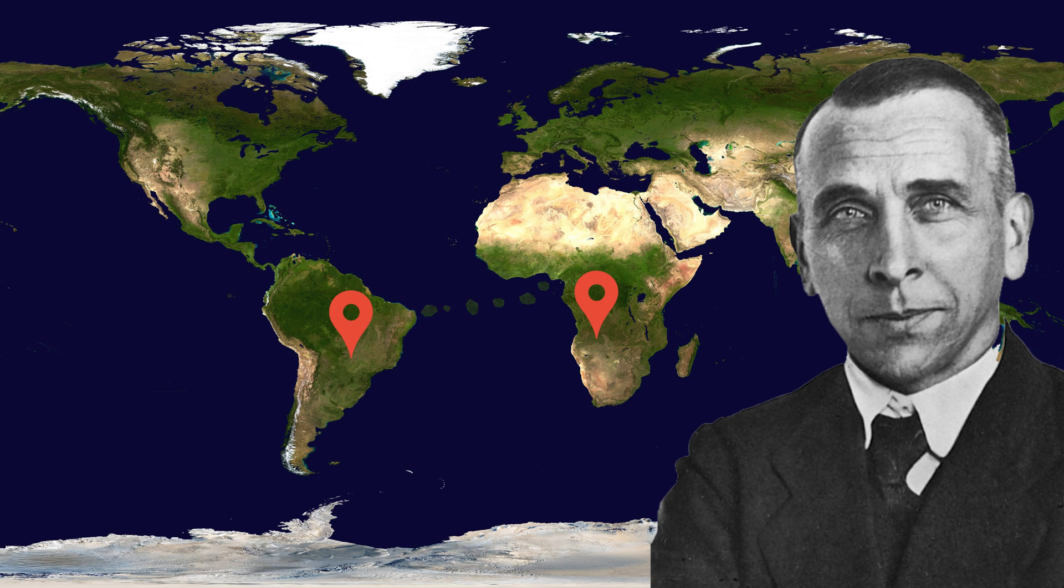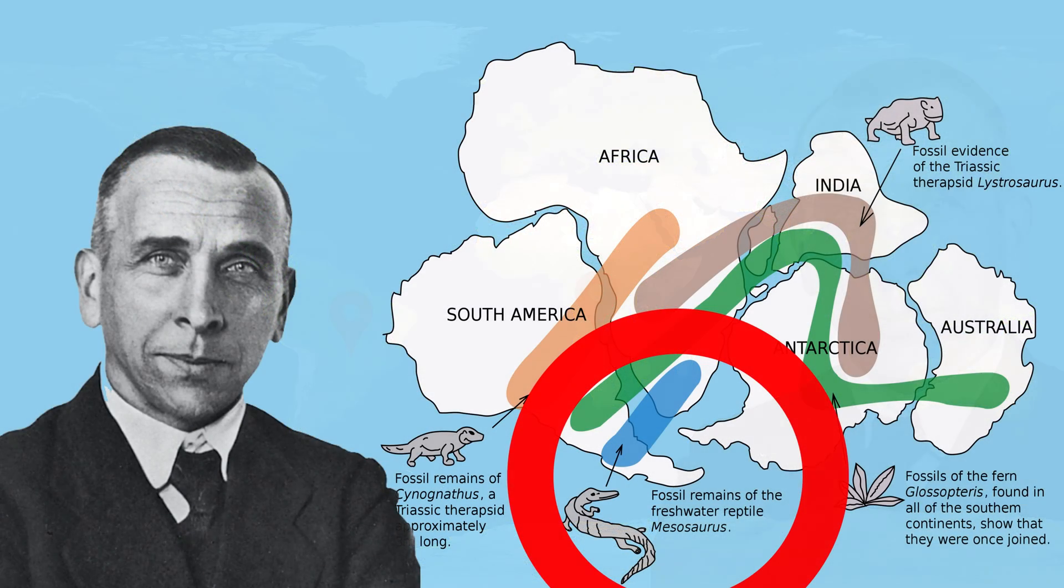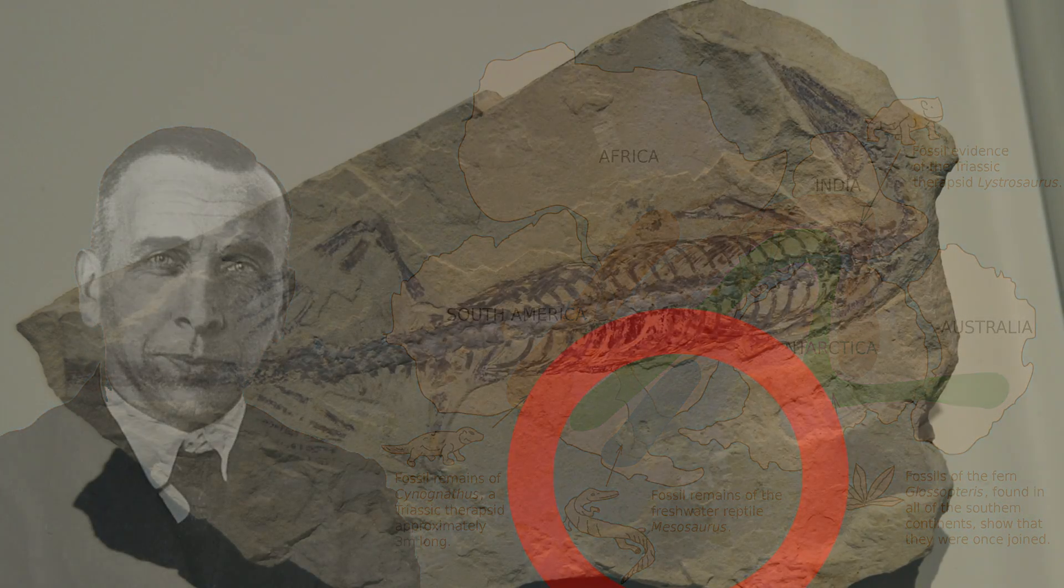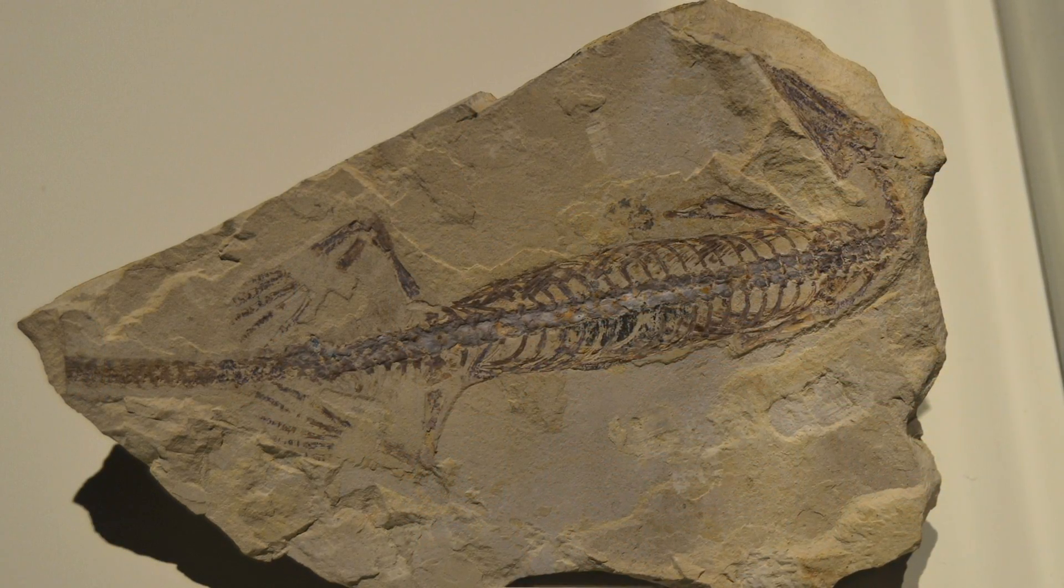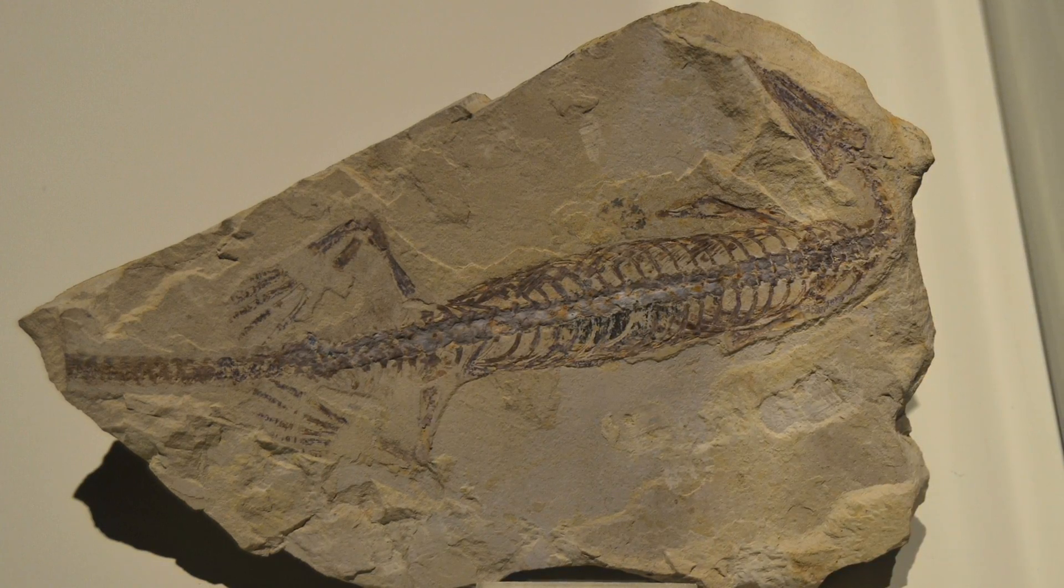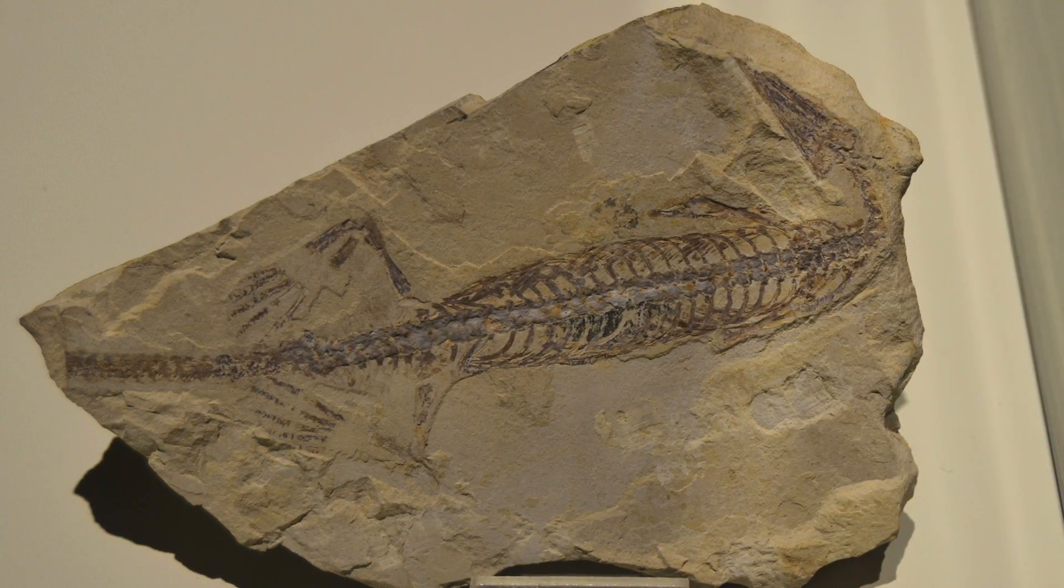So Wegener took the bull by the horns and started researching. For example, he discovered that fossils of the Mesasaurus, a small marine reptile that lived about 280 million years ago, had been found in both South America and Southern Africa. It was a marine animal, so yes, there was a possibility that it had swam across the ocean, but a question remained.